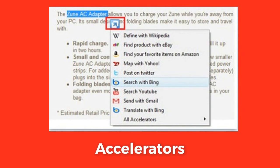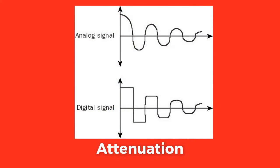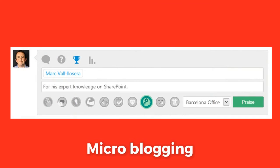Accelerators are a form of selection-based search which allow users to invoke an online service from any other page using only the mouse, and were introduced by Microsoft in Internet Explorer 8. Attenuation refers to the general loss in the intensity of a signal, whether analog or digital.